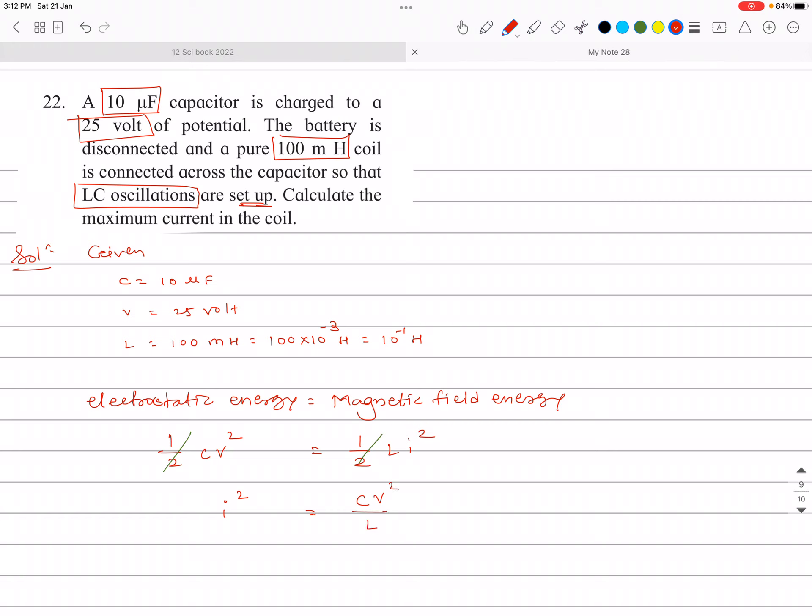Now we substitute the values. After substituting, the value of C, which is 10 microfarad, we convert into farads. Micro means 10 raised to minus 6, so here 10 into 10 raised to minus 6, multiplied by V is 25, 25 squared.